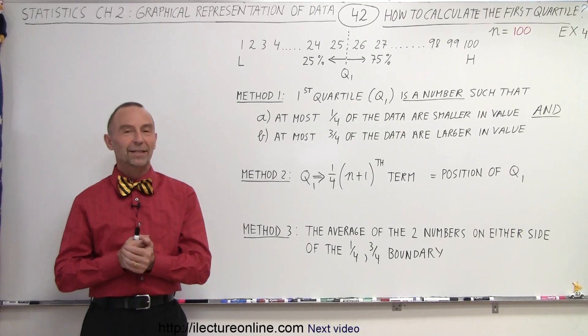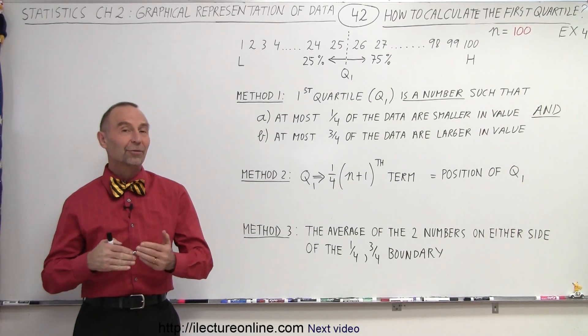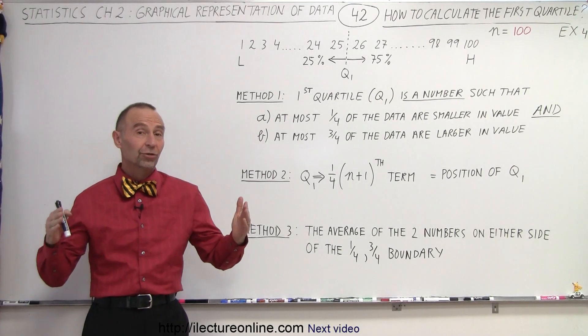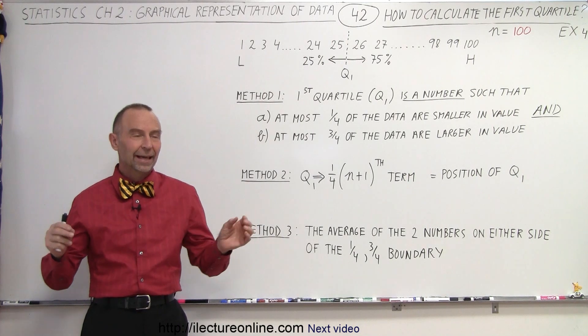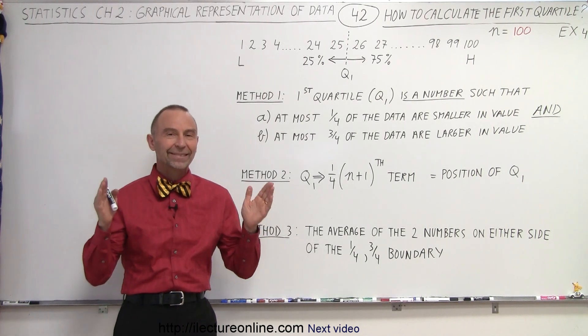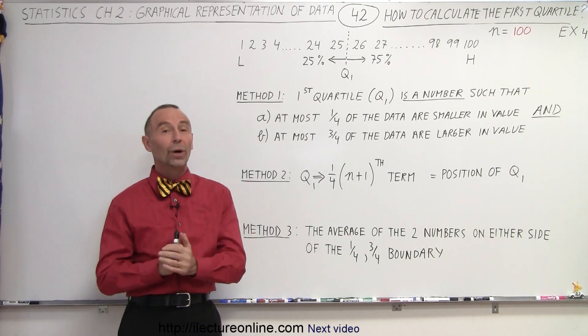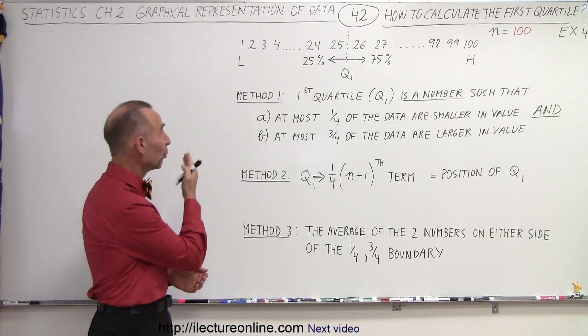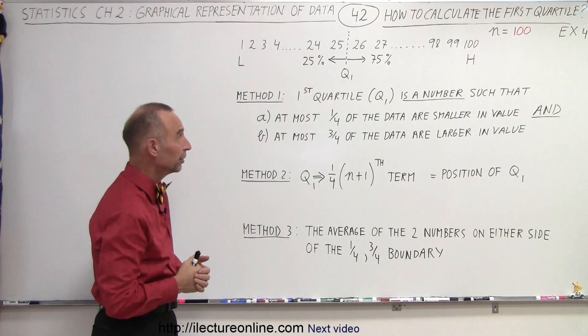Welcome to my lecture online. Let's find the first quartile for a larger data set — an ideal data set where we have exactly 100 data points, numbers from 1 to 100.